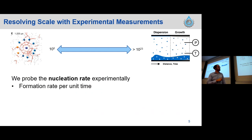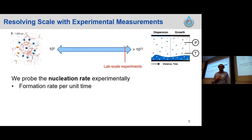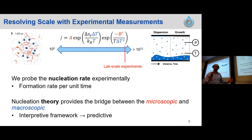One way we can do this is to measure experimentally different things that characterize the hydrate formation process. What we tend to measure is something called the nucleation rate — that's our hydrate formation rate per unit time, or the inverse of the nucleation rate is the average time to form. When we do these measurements we're at the lab scale, so we're closer to the microscopic scale than on a massive system, though not by much. What we can do is look at how the nucleation rate changes between these different scales, and to do that we need to use theory. Nucleation theory gives us a bridge between these two scales.